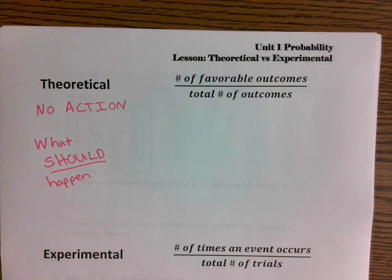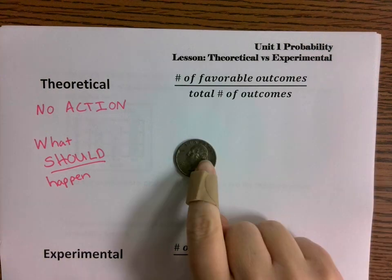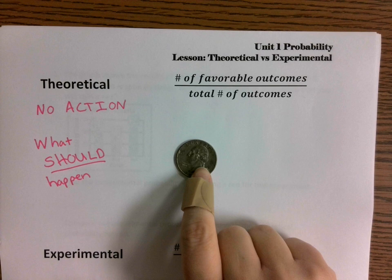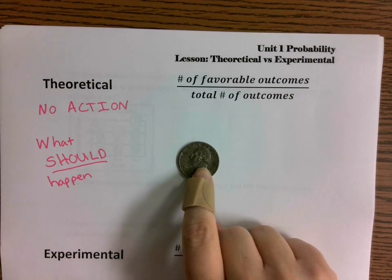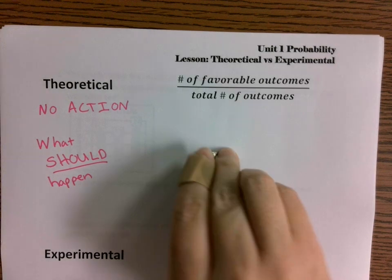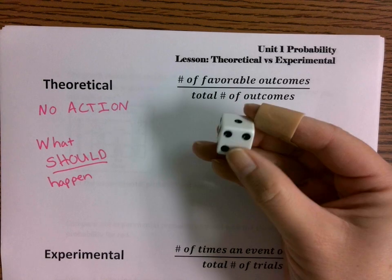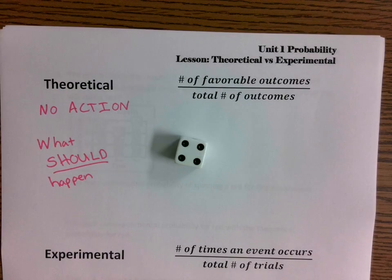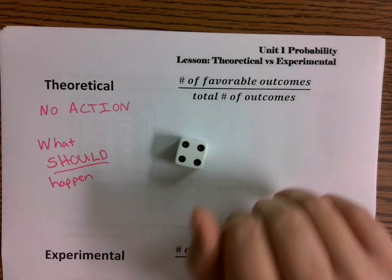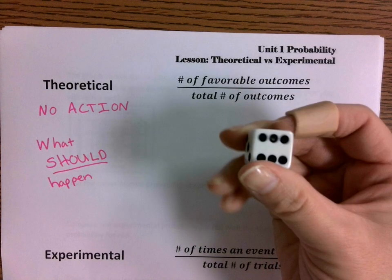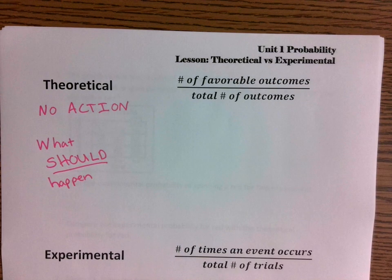If I flip this coin 10 times, in theory I should land on heads how many times? Five, right? Because it's half. In theory, if I roll this die, I should land on a four one out of six times, because the four exists one time out of the six numbers on this die. So that is me not doing anything at all — not actually flipping or rolling anything. I'm just identifying in theory what should happen.